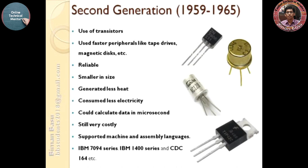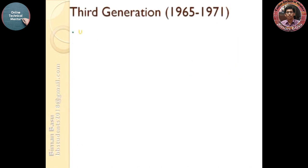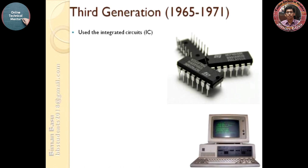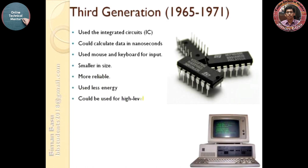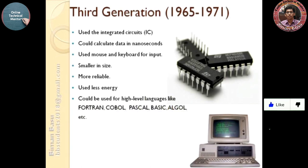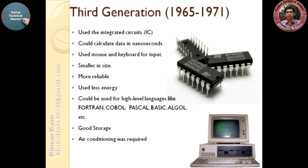Third generation: 1965 to 1971. In this generation, the integrated circuit (IC) was first introduced. Could calculate data in nanoseconds. Used mouse and keyboard for input. Smaller in size compared to first and second generation, more reliable, used less energy. Could be used with high-level languages like FORTRAN, COBOL, Pascal, BASIC, ALGOL, etc. Had good storage. Air conditioning was still required. IBM 370, IBM System 360, and Honeywell 6000 series are some examples of third generation.